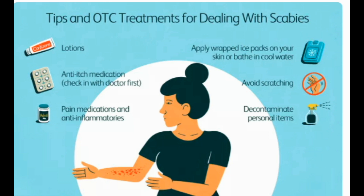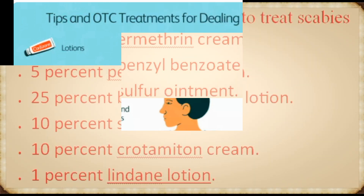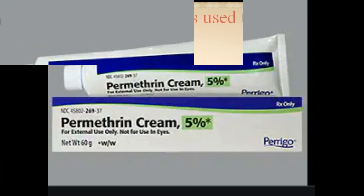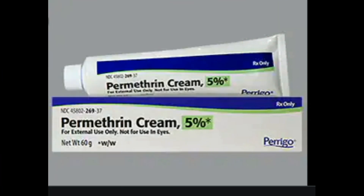Treatment for scabies usually involves getting rid of the infestation with prescription ointments, creams, and lotions applied directly to the skin. Oral medications are also available. Your doctor will probably instruct you to apply the medicine at night when the mites are most active, treating all skin from the neck down; the medicine can be washed off the following morning. Common medicines used to treat scabies include 5% permethrin cream, 25% benzyl benzoate lotion, 10% sulfur ointment, 10% crotamiton cream, and 1% lindane lotion.